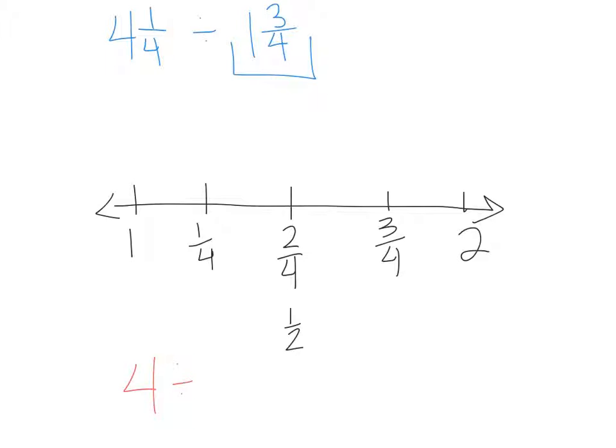To find the 1 and 3 fourths mark, I start at 1 and then just go 3 fourths past the 1. So 1 fourth is here, 2 fourths is here, and 3 fourths is here. So my mark is going to go right up there.